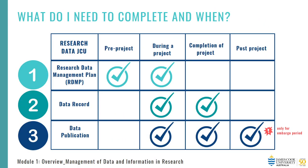Throughout your research project you are required to complete the three records. It's also important to note that Research Data JCU replaced the Tropical Data Hub at the start of 2021. All projects commencing as of 2021 require all researchers, including HDR candidates, to use Research Data JCU and to complete in full a research data management plan, a data record and a data publication. If you have an active project that commenced prior to 2021, you are not required to retrospectively complete a research data management plan; however, you must complete a data record and data publication.